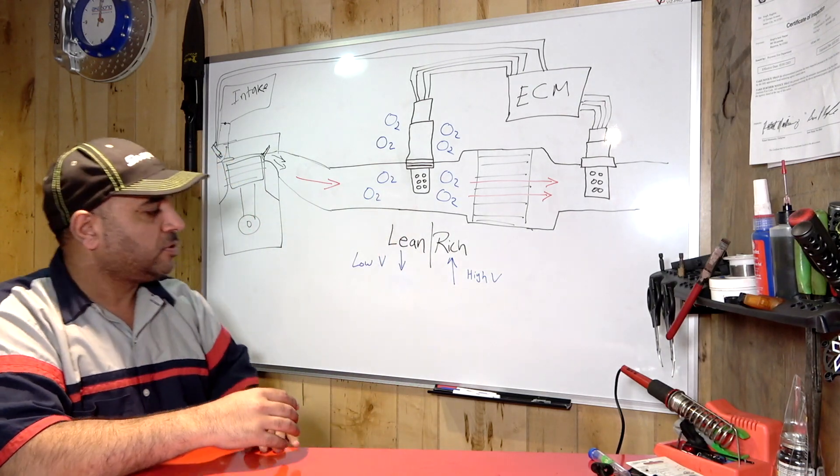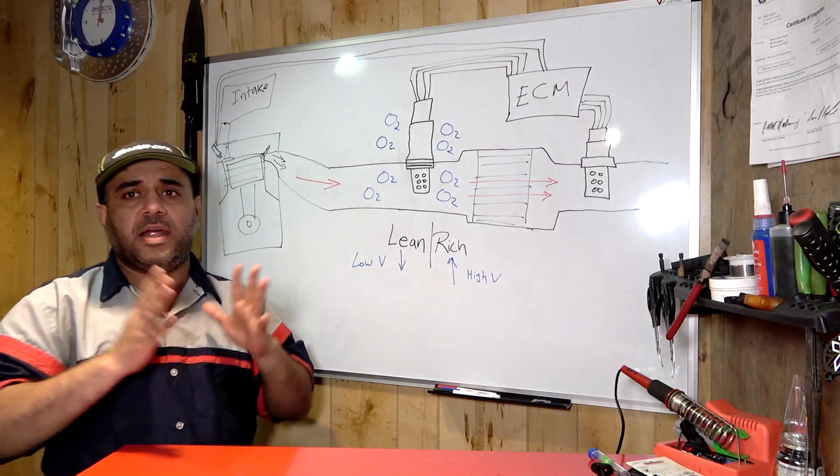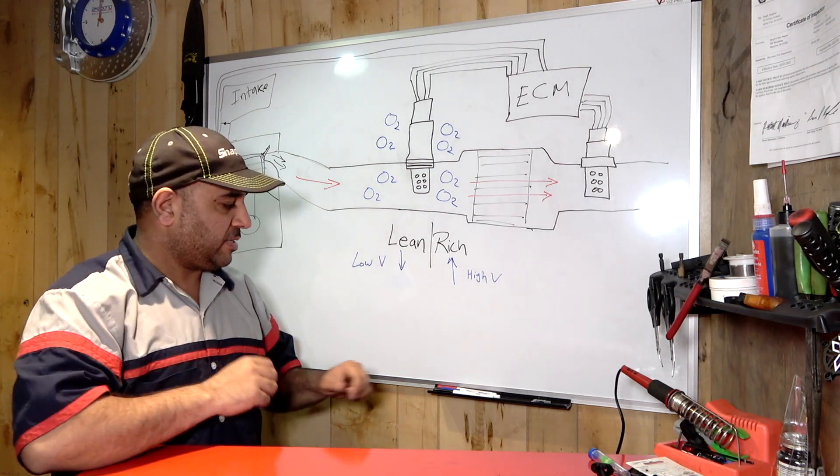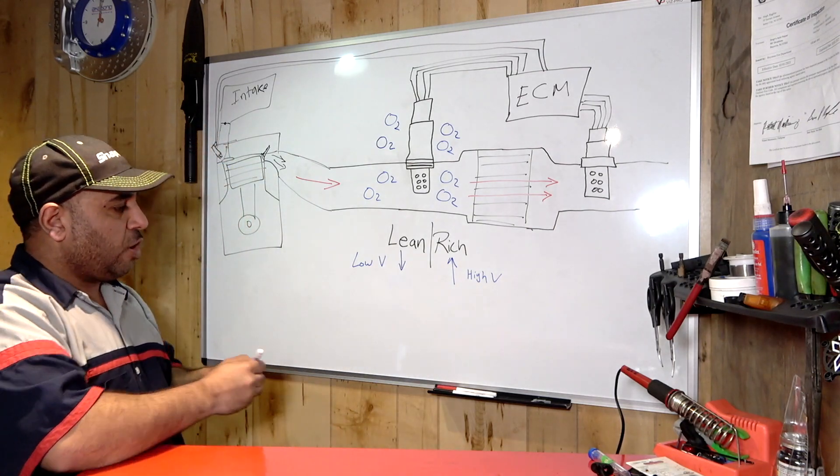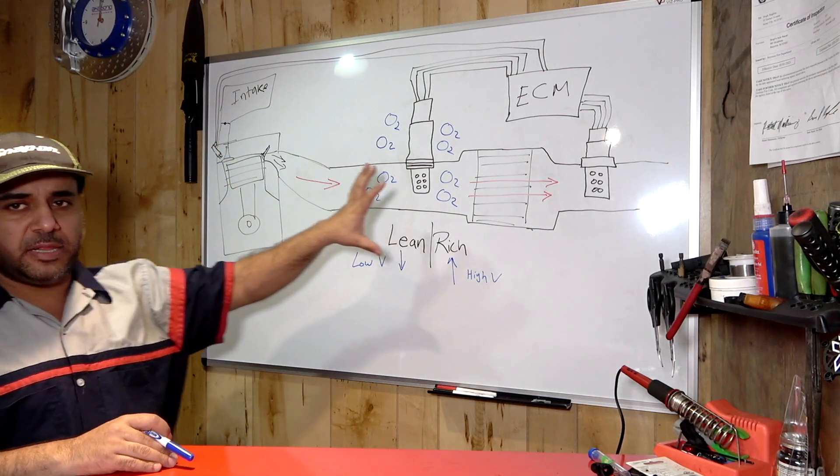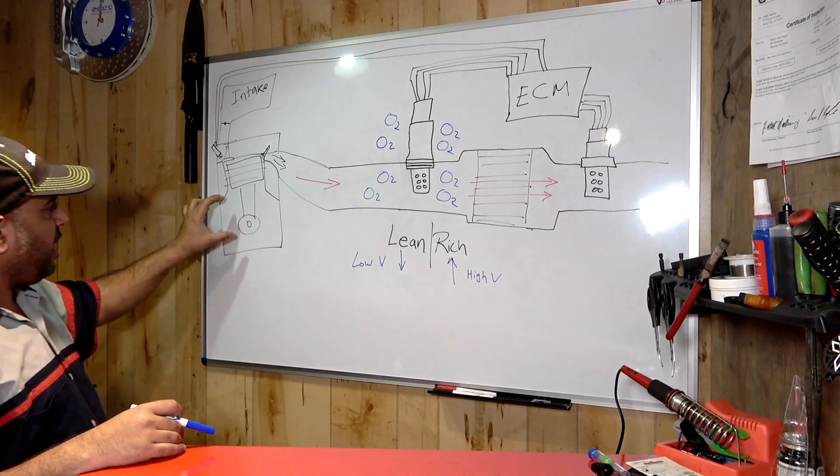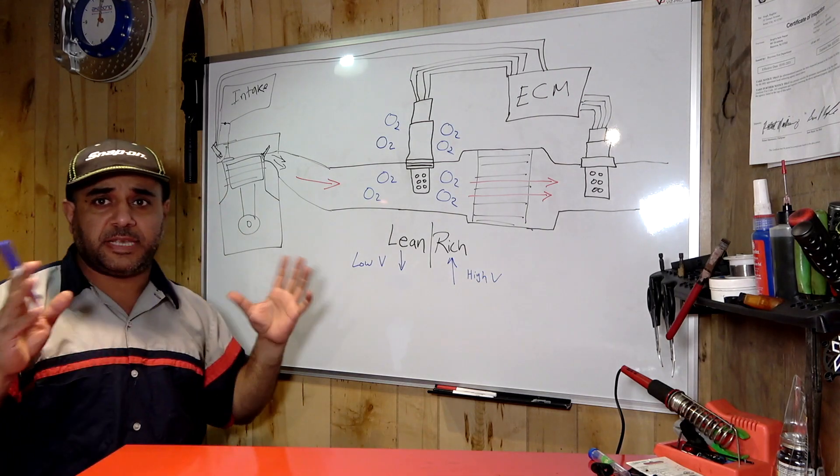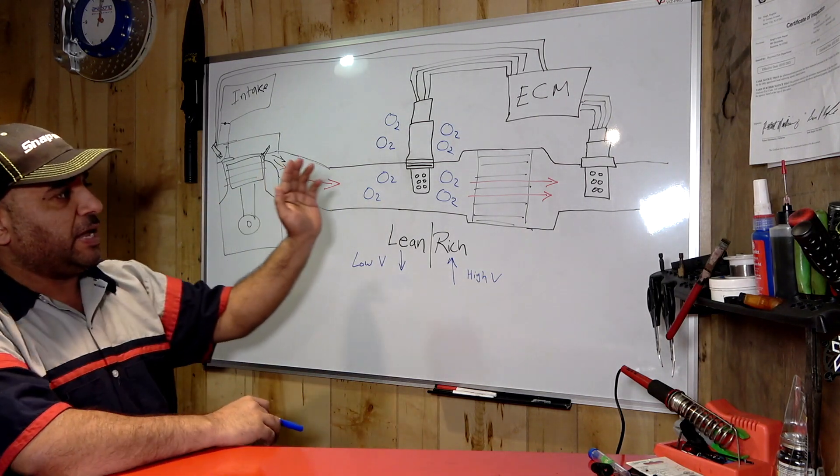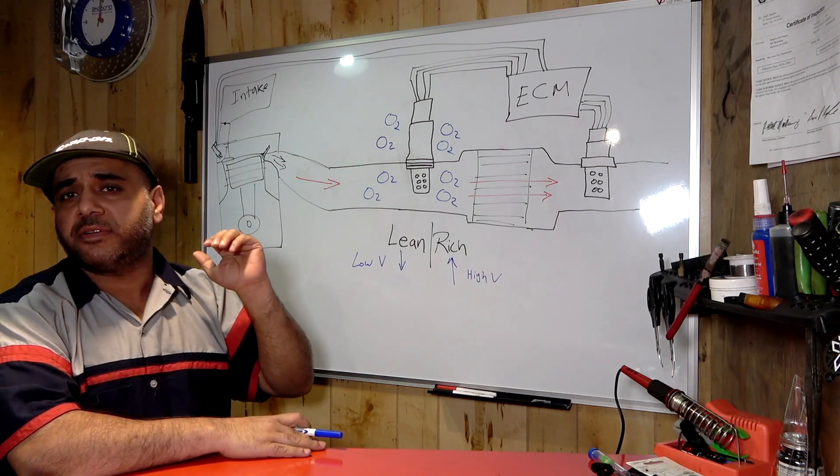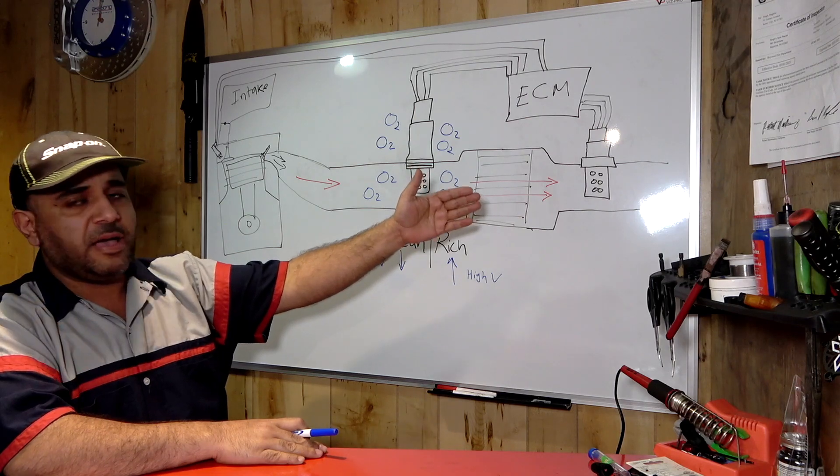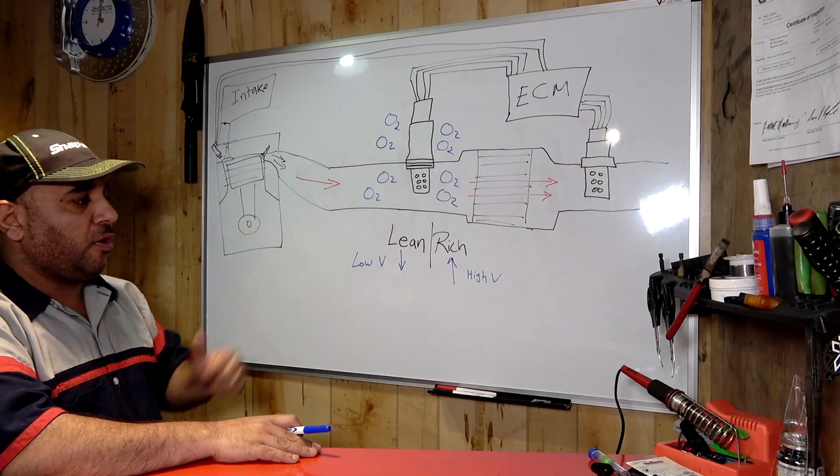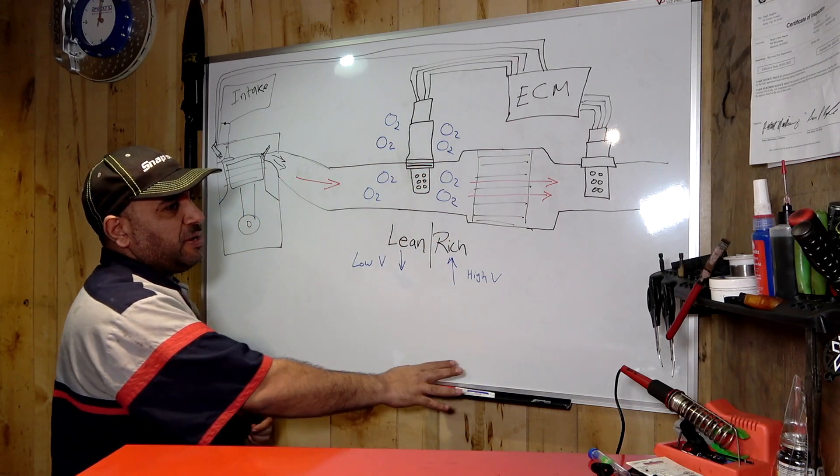Today's video we're gonna explain and understand what an oxygen sensor is, how it works, and what's the function. Let's talk about the diagram here. We got our engine, let's say it's a four-cylinder engine, so we got two oxygen sensors. If you have a six-cylinder or V-shape engine, you're gonna have probably more than two.